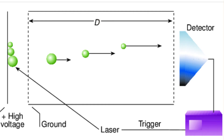After the ions leave the quadrupole, they are analyzed using the time of flight mass analyzer. Here, all of the ions are accelerated with the same force and the resulting differences in travel velocity through the free drift region of the time of flight analyzer occur as a consequence of the size of the ions. Subsequently, by measuring the time it takes them to reach the detector at the end of the drift region, we can calculate their masses.